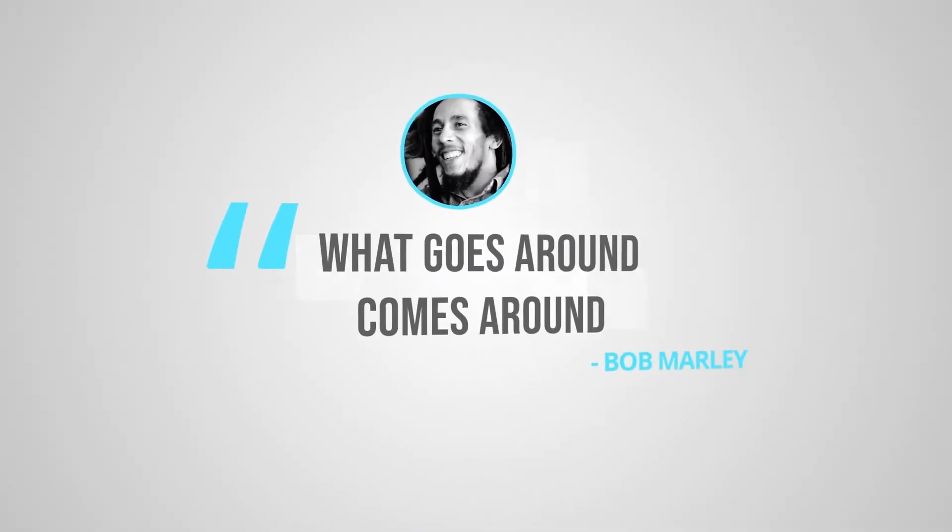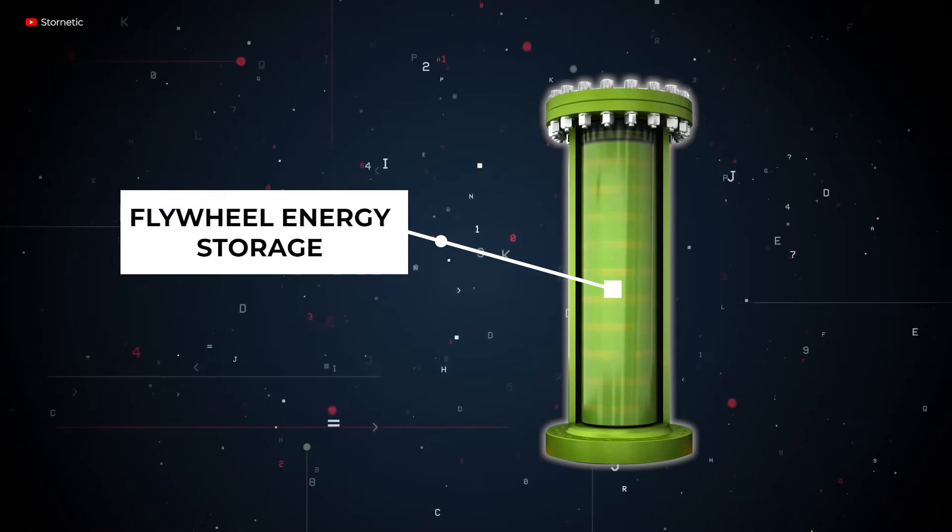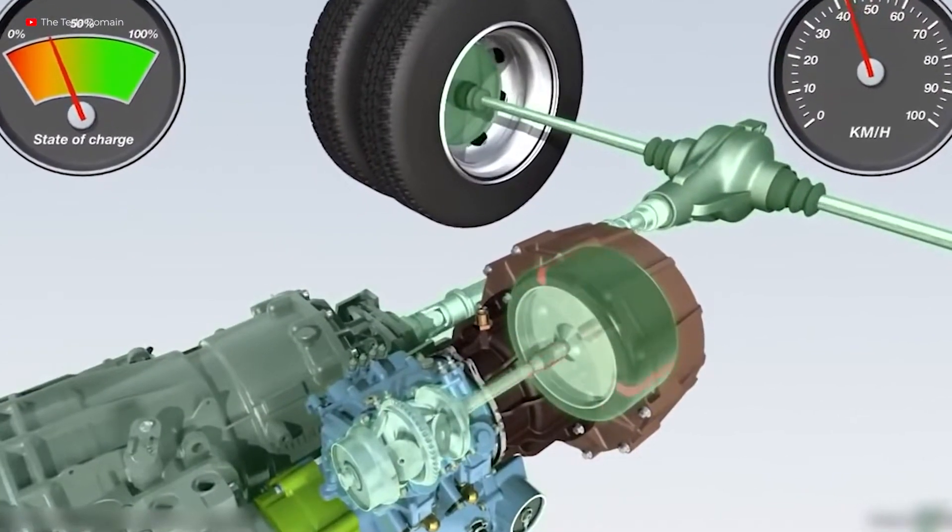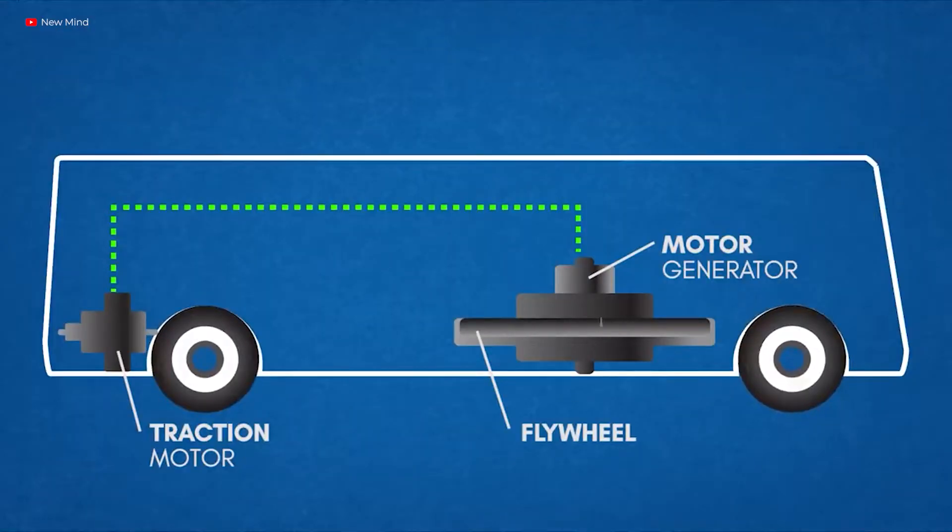Bob Marley had it right. What goes around comes around. It also describes what's happening with flywheel energy storage these days. After a wave of breakthroughs in material, magnetic bearing control, and power electronics, the technology is making a comeback.